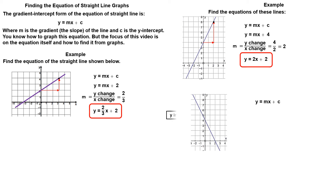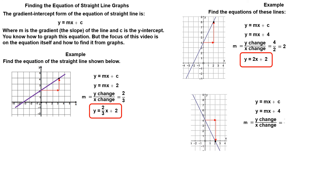Looking at the graph, we can see the y-intercept. The y-intercept is 4, so C equals 4. Choose two known points, starting at the y-intercept, from left to right. Go right 2 units and down 4 units. The gradient is minus 2. This is the equation of the line: y = -2x + 4.